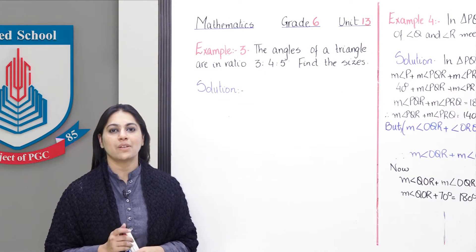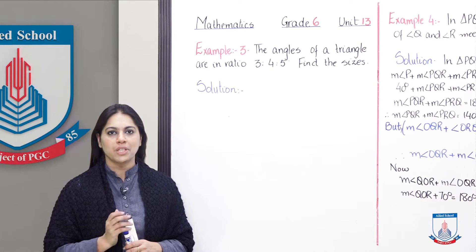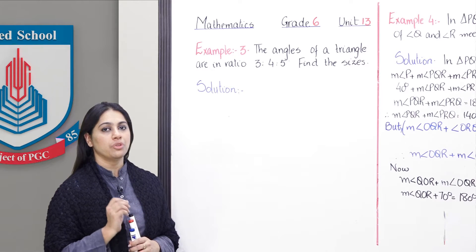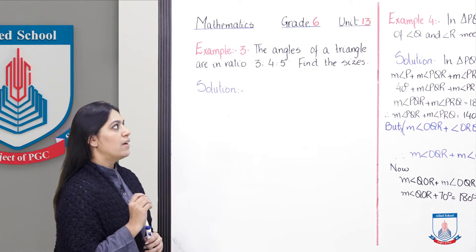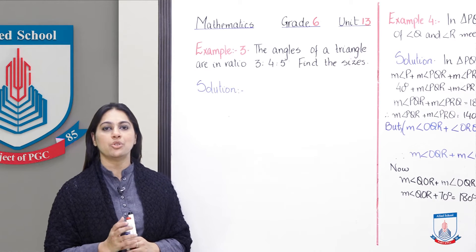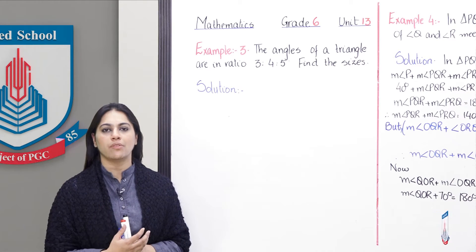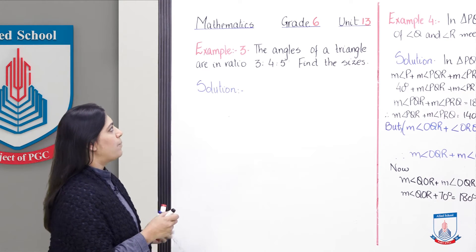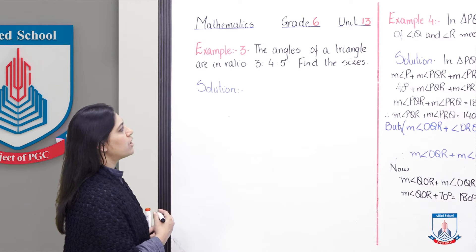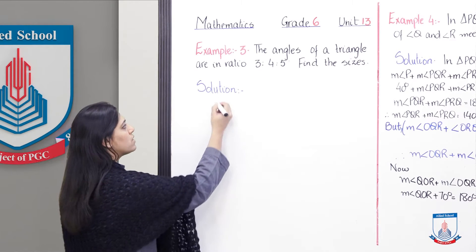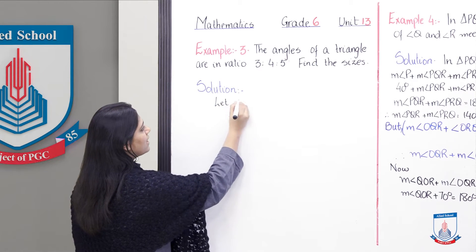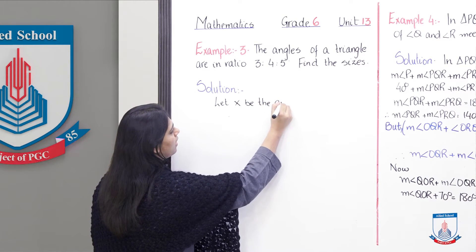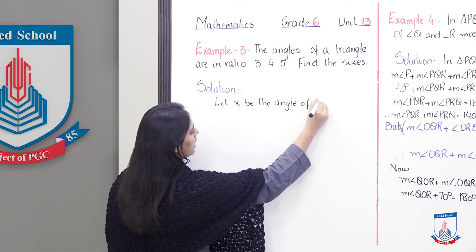Grade 6, we are going to start with Example number 3. Let's read out the example: the angles of a triangle are in ratio 3, 4, and 5 — find the sizes exactly. So let's get started. We will suppose that x be the angle of the triangle.